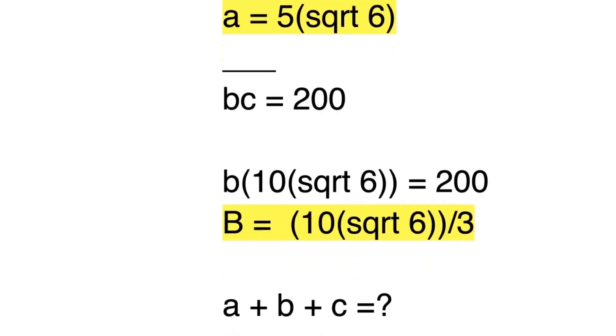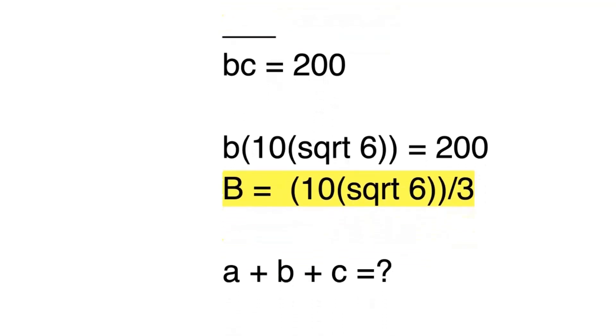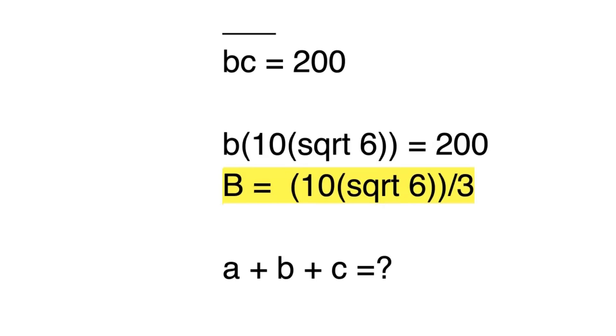Using our final given equation, which is BC equals 200, we know the value of C, and so now we just plug in the value of C in the equation. We get B times 10 times square root 6 equals 200.